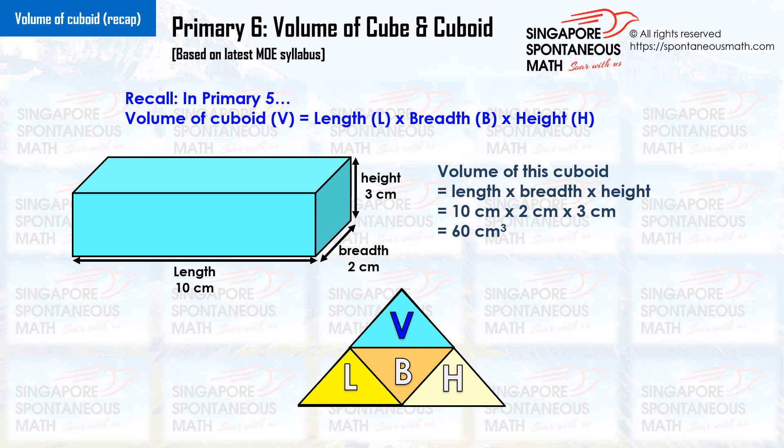In Primary 5, we learnt that the formula for volume of a cuboid is: length times breadth times height. For example, 10 cm times 2 cm times 3 cm equals 60 cm³. The volume of this cuboid is 60 cm³.